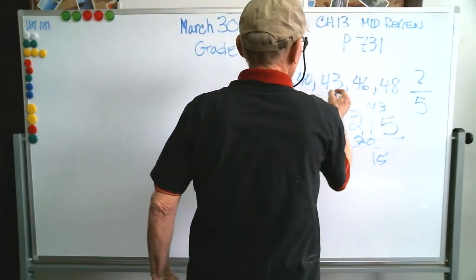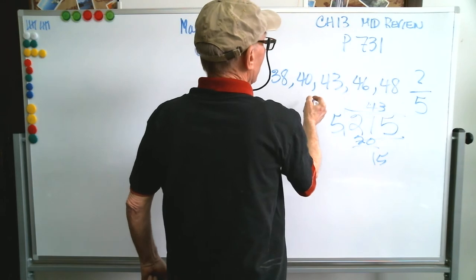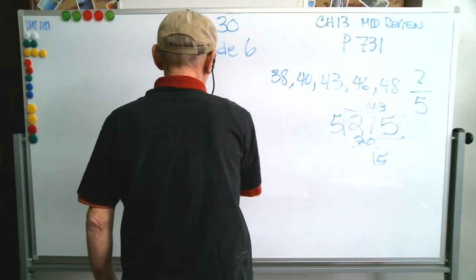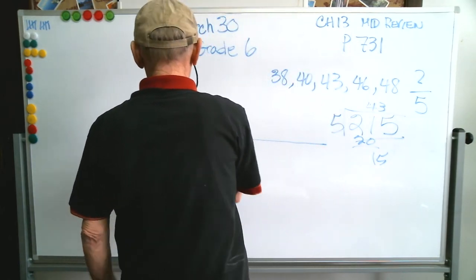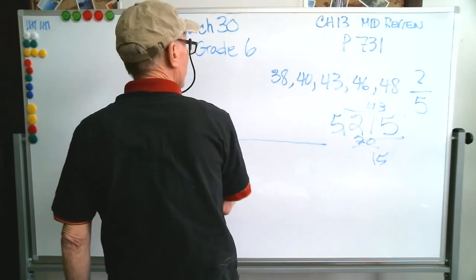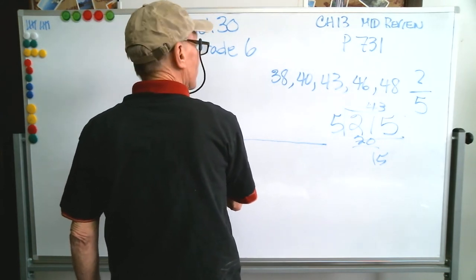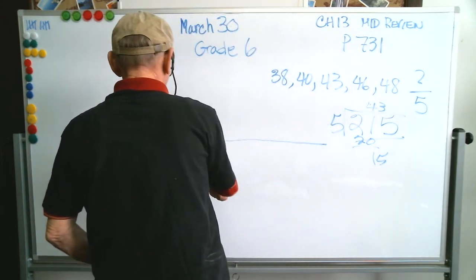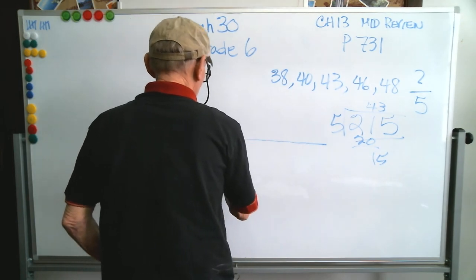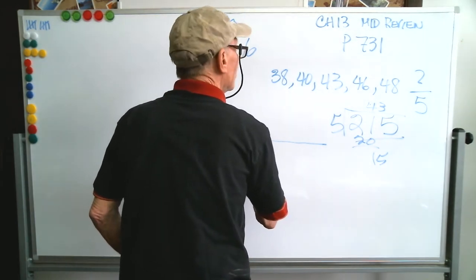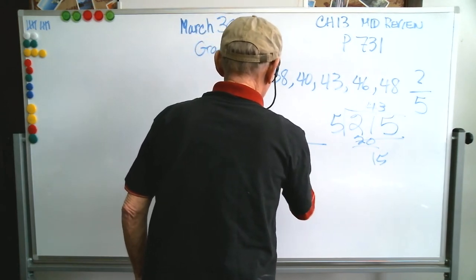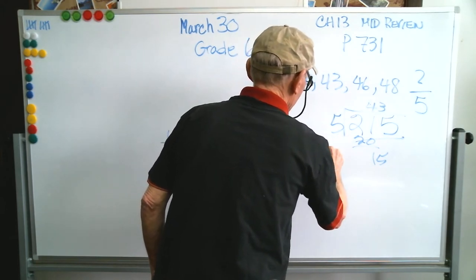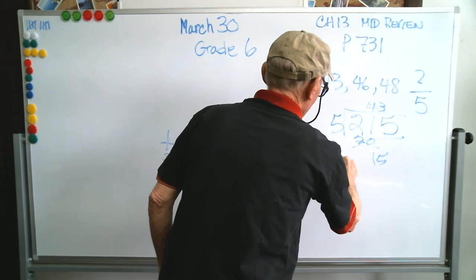So now, if 43 is our average, to find the absolute mean deviation, let's build our line. We've got 38, 39, 40, 41, 42, 43, 44, 45, 46, 47, and 48.